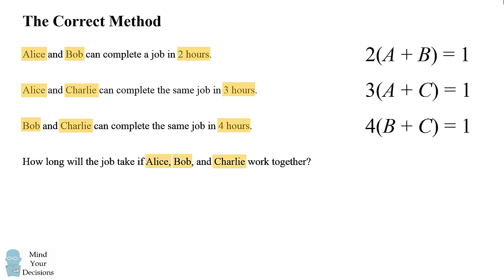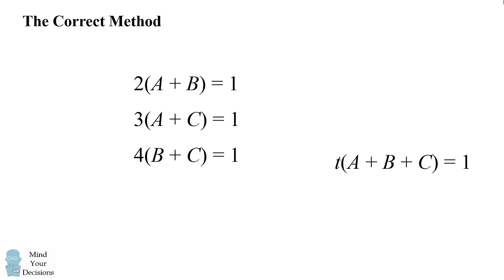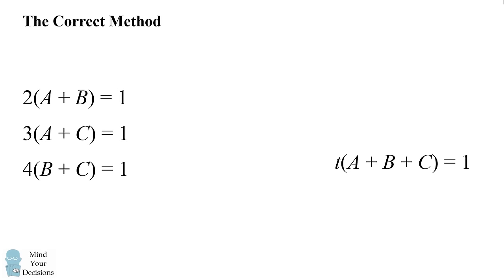Now we want to figure out what would happen if they all three work together. So we are needing to solve for the time times the quantity A plus B plus C equals 1. We need to solve for this variable T. So how do we do that? Well, we can similarly add up all the equations, but we have different quantities of each of these variables. So in order to get the same number of each variable, we are going to do a little trick.